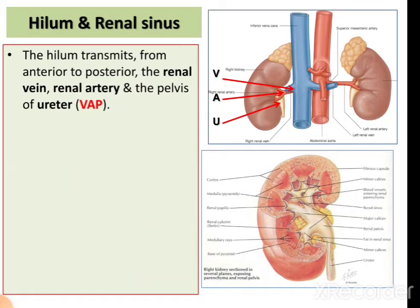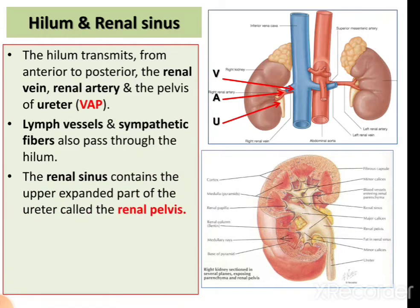The hilum is the area in the kidney which transmits various neurovascular structures into and out from the kidney. These are the renal vein, renal artery, and pelvis of ureter. The arrangement of these structures from anterior to posterior is: most anteriorly we have the vein, then the artery, then the pelvis of the ureter. Lymph vessels and sympathetic fibers also pass through the hilum.